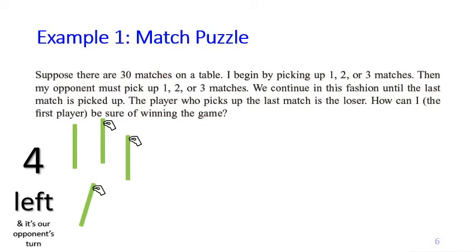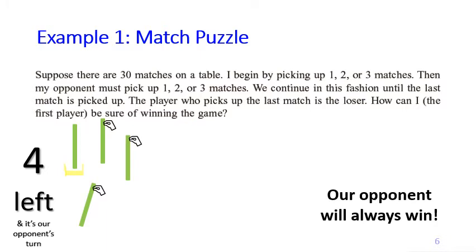Now consider a slightly more complicated situation: there are four matches left on the table and it's our opponent's turn. In this case, our opponent will win, because he or she can pick up three matches and leave just one match for us to pick up — making us the loser. So four matches on the table with it being our opponent's turn is a situation we should avoid if we want to win.